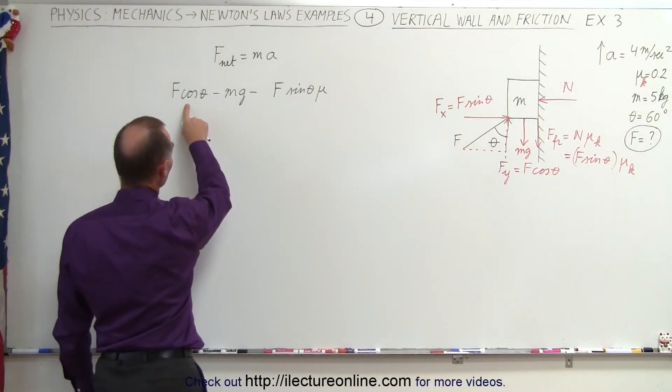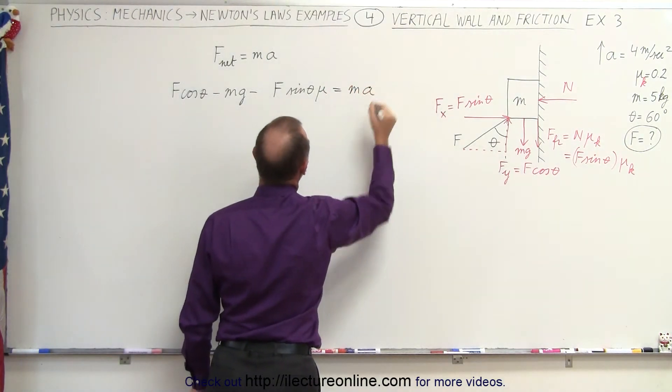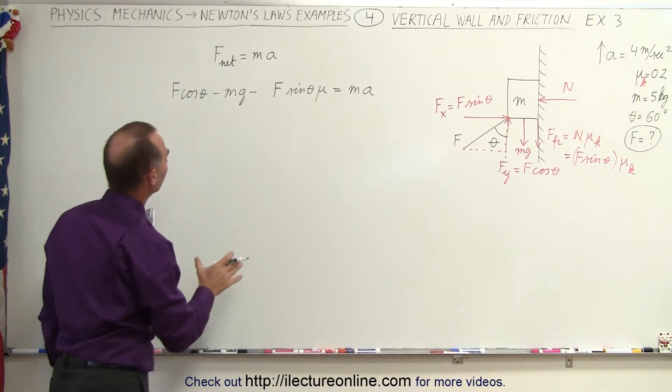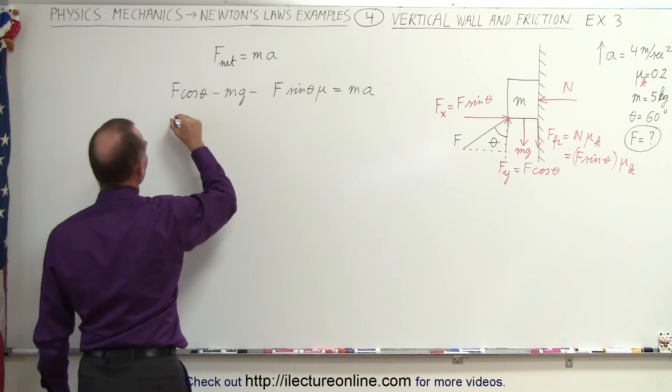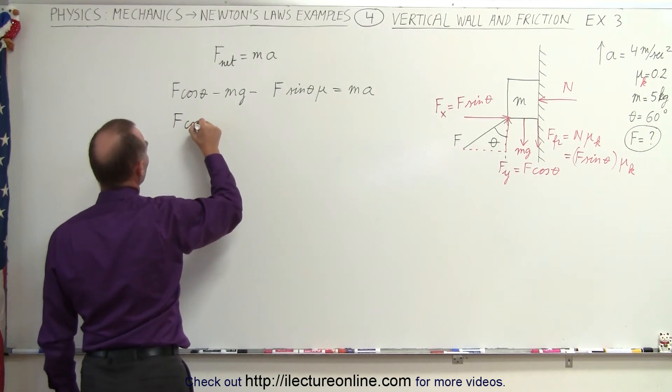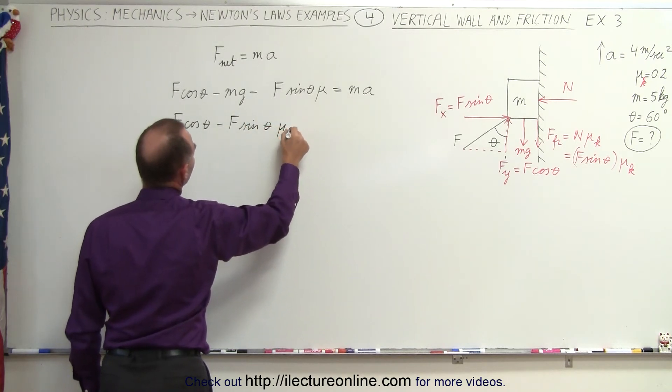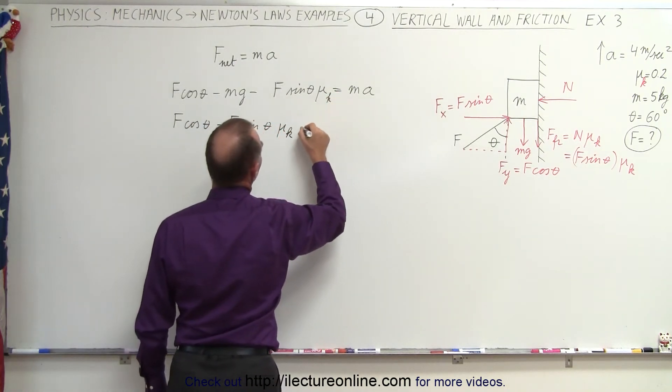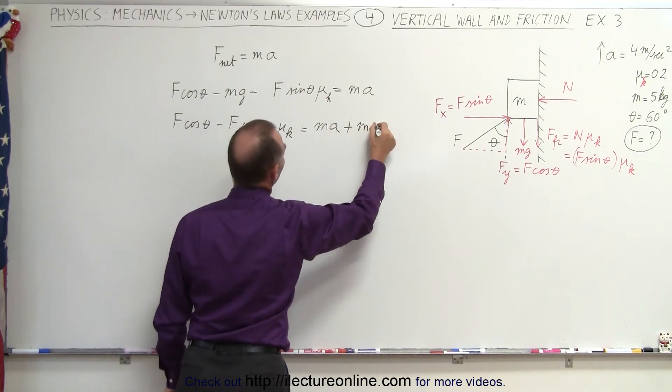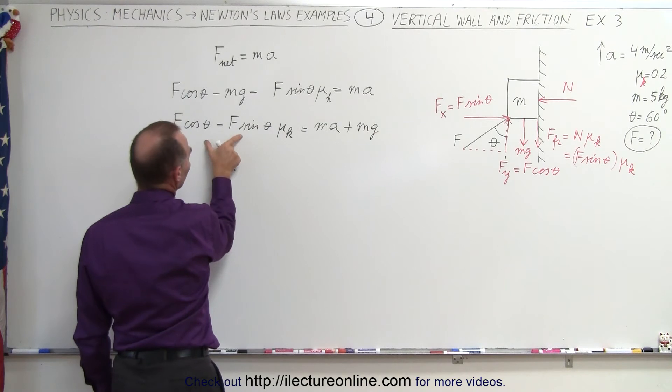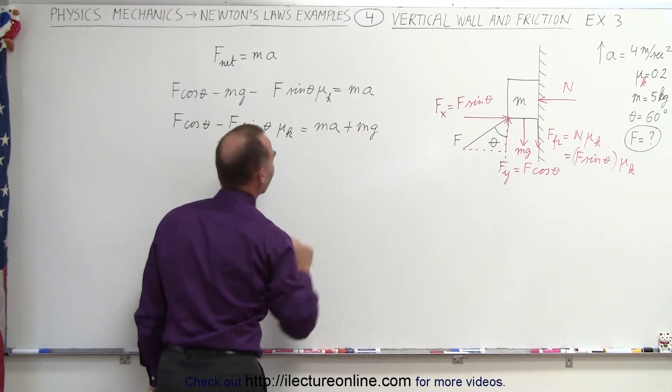So now we have the force aiding minus the two forces opposing equals the mass times acceleration. So since we're looking for F, we'll put all the terms with F on one side, everything else on the other side. So we end up with F times the cosine of theta minus F times the sine of theta times mu sub k, is equal to ma plus mg. So the force here doesn't only cause acceleration, it also holds the object up against gravity.